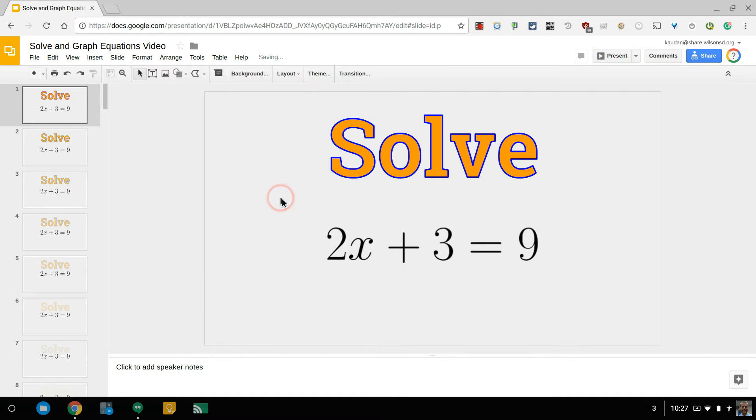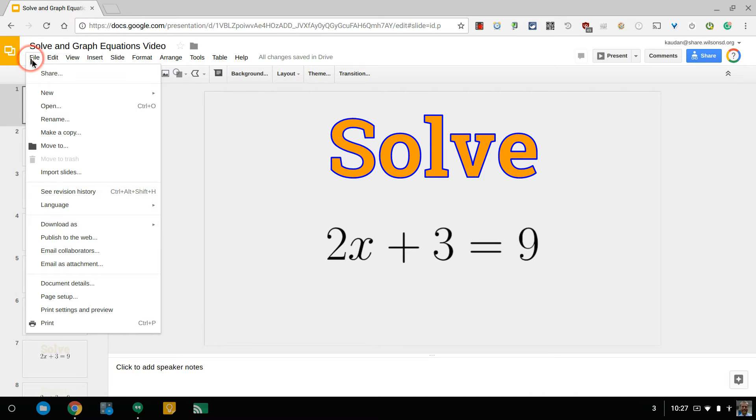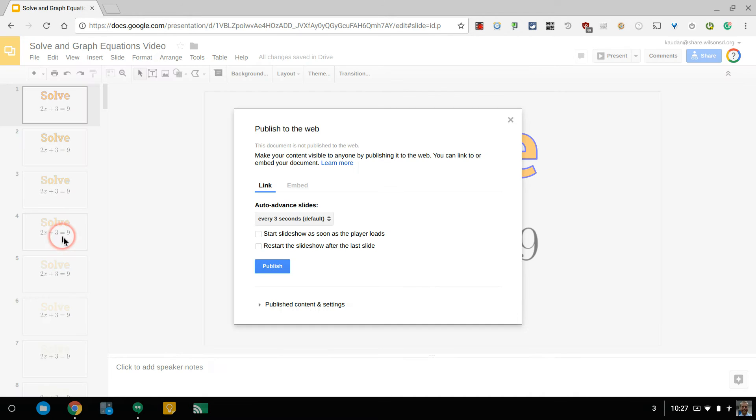Let's see how we get this into a video. I could present this, but then I have to use my left and right arrow keys 88 times to get through the entire presentation. If I go to File > Publish to the Web, I have some options here. I can start this slideshow as soon as the player loads, which I'm going to check. I'm also going to change this to auto-advance my slide every one second instead of every three seconds.